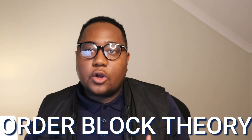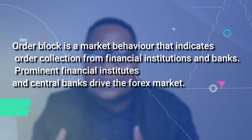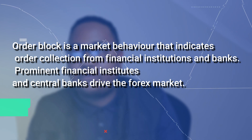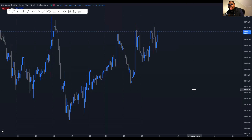The order blocks theory tells us that this is the area in the market where we see large financial institutions and banks taking their trades or collecting liquidity to move the market. I began to conclude that we can use that to really understand where the market is going, because it controls the whole structure. I want to show you how to identify a bullish order block and a bearish order block on this H1 Nasdaq chart.